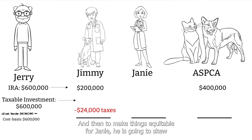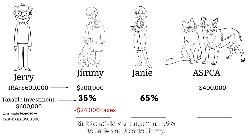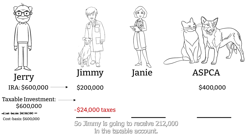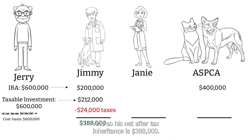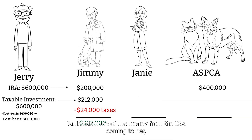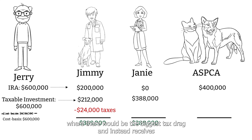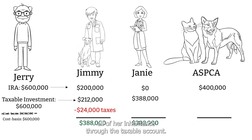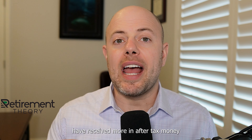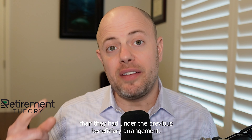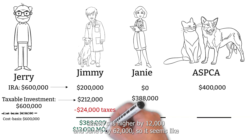To make things equitable for Janie, Jerry skews the taxable account beneficiary arrangement 65% to Janie and 35% to Jimmy. Jimmy receives $212,000 from the taxable account, giving him a net after-tax inheritance of $388,000. Janie receives none of the IRA — where the biggest tax drag would be — and instead receives all of her inheritance through the taxable account, also netting $388,000.